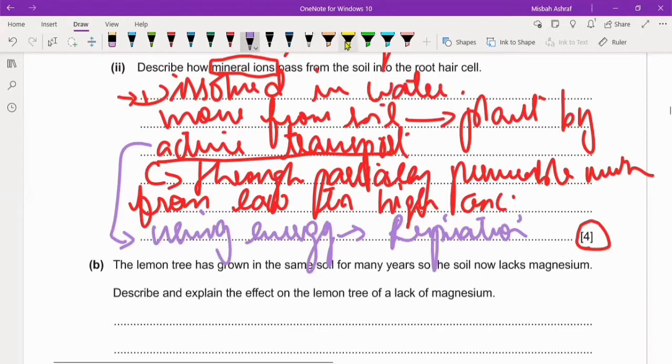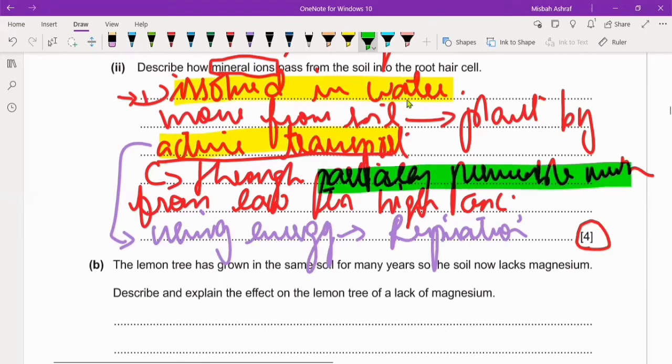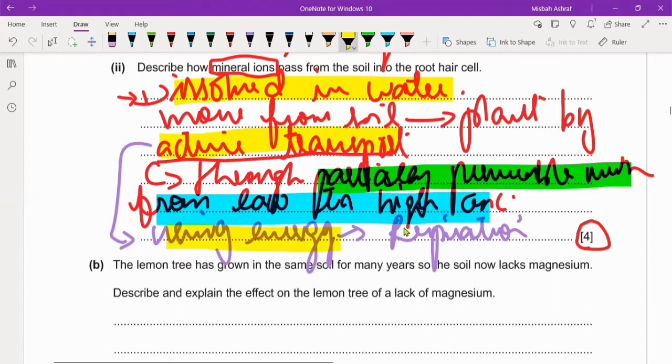We have attempted dissolved in water, and then active transport, another mark. Then partially permeable membrane, this will give you another mark. Then from low to high concentration, another mark. And using the energy from respiration. I have more marks than needed.